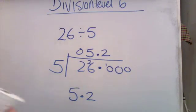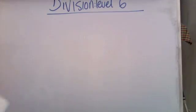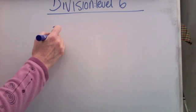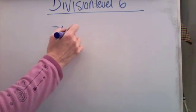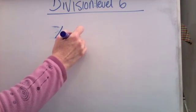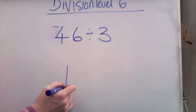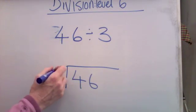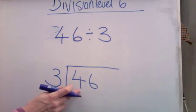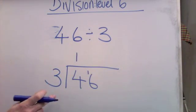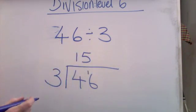Let's try another. 46 divided by 3. How many threes in 4? That's 1 remainder 1. How many threes in 16? Well, 5 threes of 15, remainder 1.